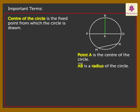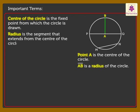Line segment AB is a radius of the circle. Radius is the segment that extends from the center of the circle to any point on the circle.